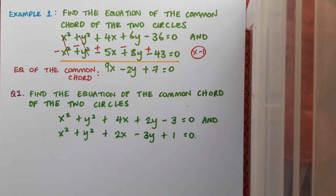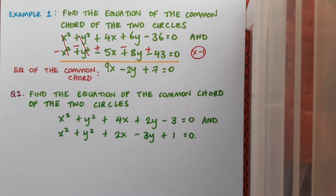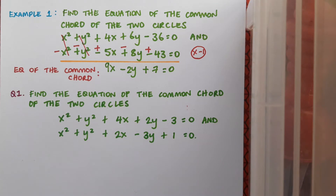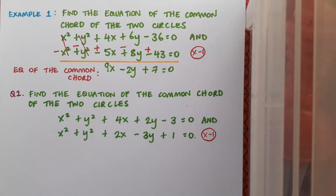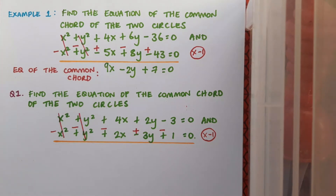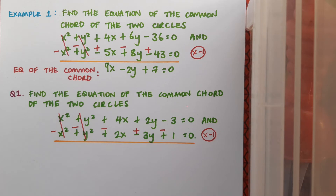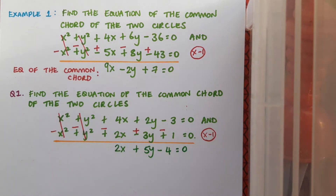Now here's a question for you. Find the equation of the common chord of these two circles: x² + y² + 4x + 2y - 3 = 0 and x² + y² + 2x - 3y + 1 = 0. Pause the video, have a go, then play and see if you're correct. I'll start by multiplying one equation by -1, then cancel. The x² and y² terms are gone, and combining the remaining terms gives the equation of the common chord.